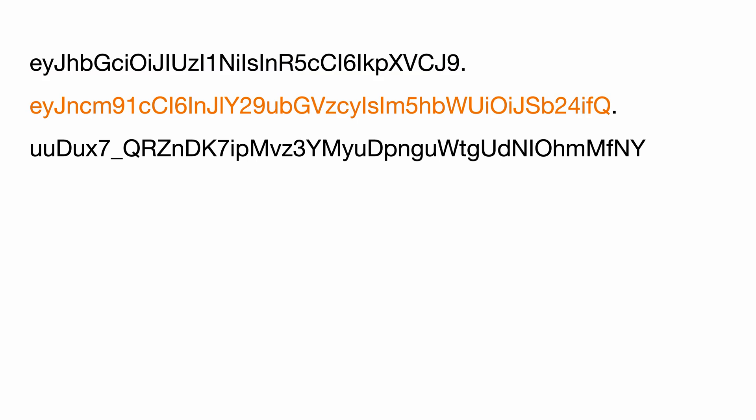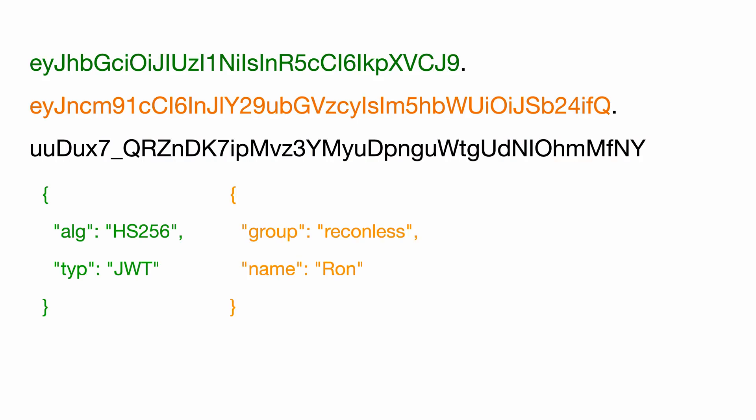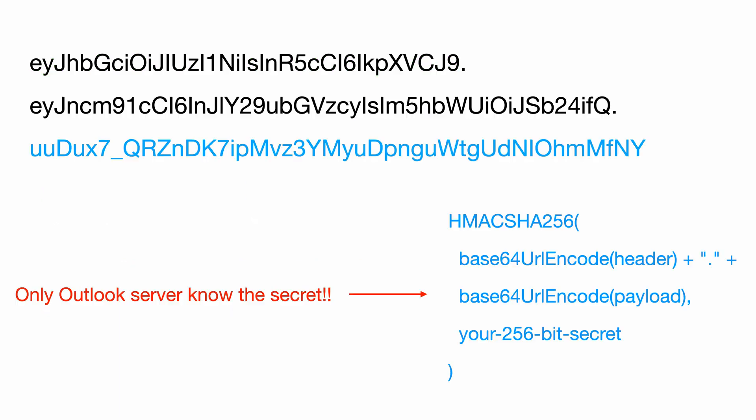For those who don't know, JWT has three parts: header, payload, and signature. The header and payload contain the user's information in order to communicate with the server. The signature part is to make sure the header and payload are generated by the server — Microsoft in this case — instead of generated by someone else on the internet.